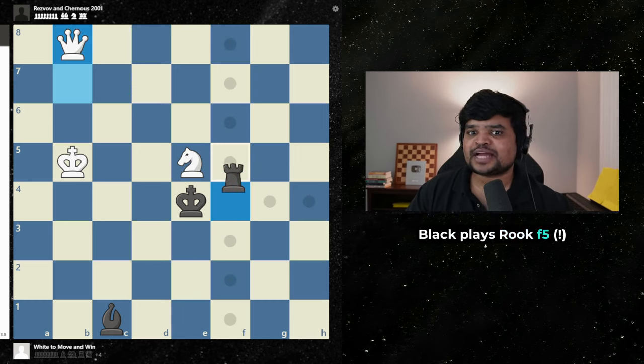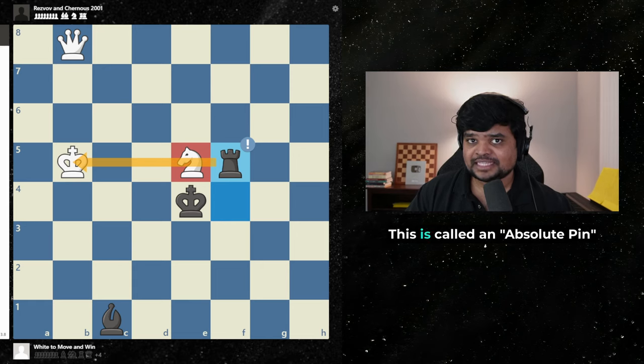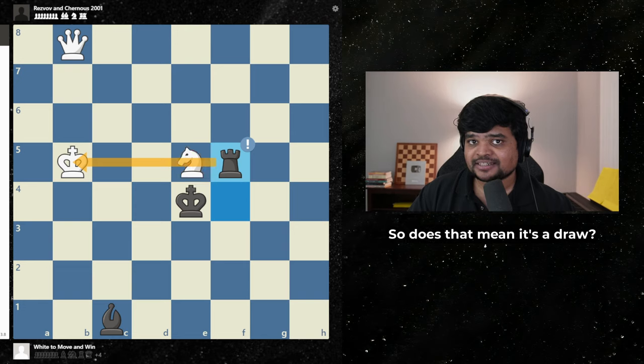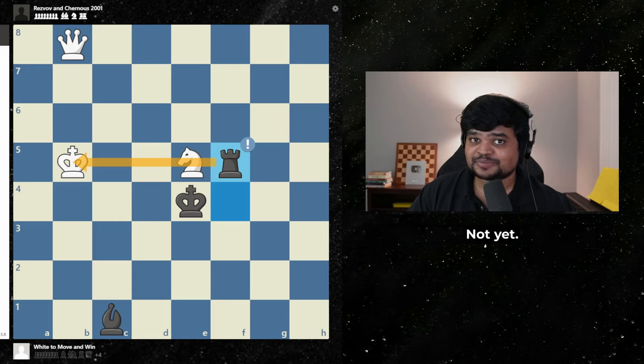Black plays rook f5. This is called an absolute pin. This knight is toast. So does that mean it's a draw? Not yet.